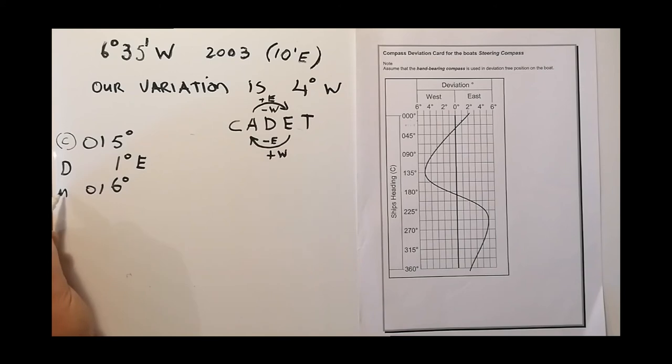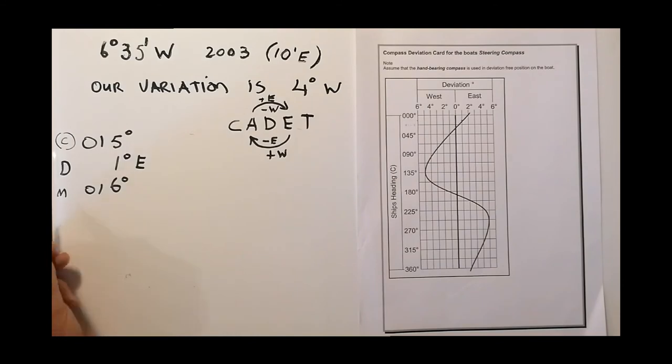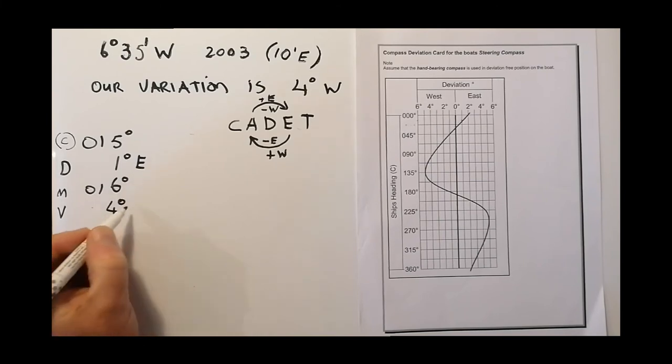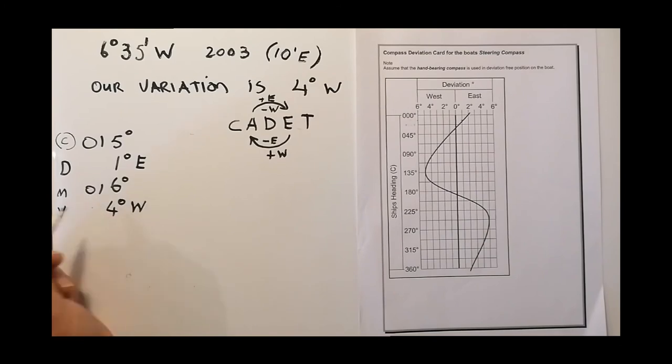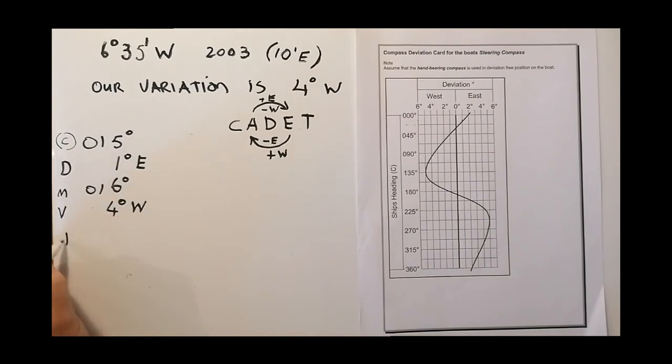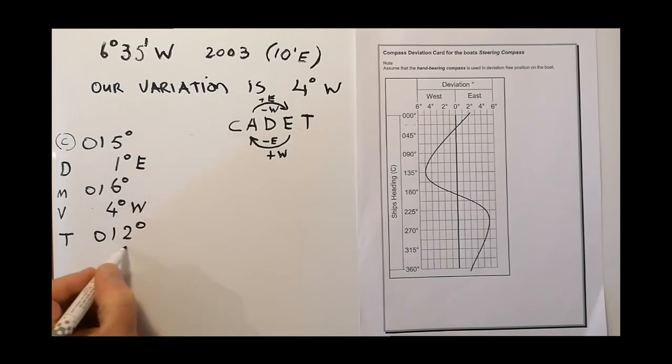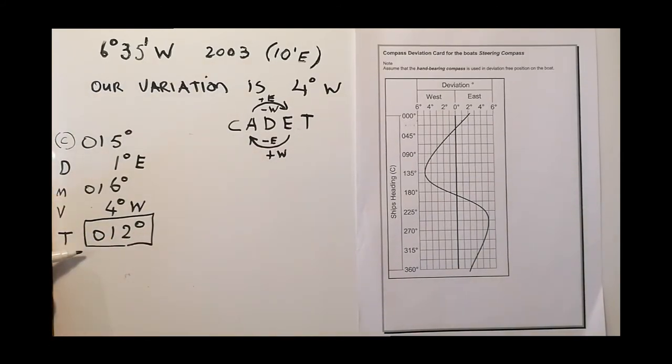Now that I have my magnetic, I need to apply my variation. My variation is 4 degrees to the west. And what does it tell me here: I need to subtract the west. So now my answer, my true answer, is 012 degrees. So this is my answer. The difference between my compass and my true is 3 degrees.